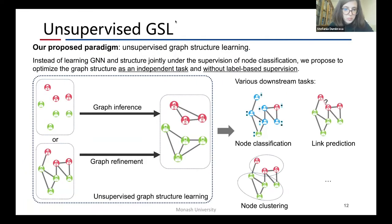To address the aforementioned problems, we propose a novel unsupervised graph structure learning paradigm. Instead of learning GNN and structure jointly under the supervision of node classification tasks, we propose to optimize the graph structure as an independent task and without label-based supervision. With the structure learned by unsupervised algorithms, we can apply it to various downstream tasks such as node classification, link prediction, and node clustering.